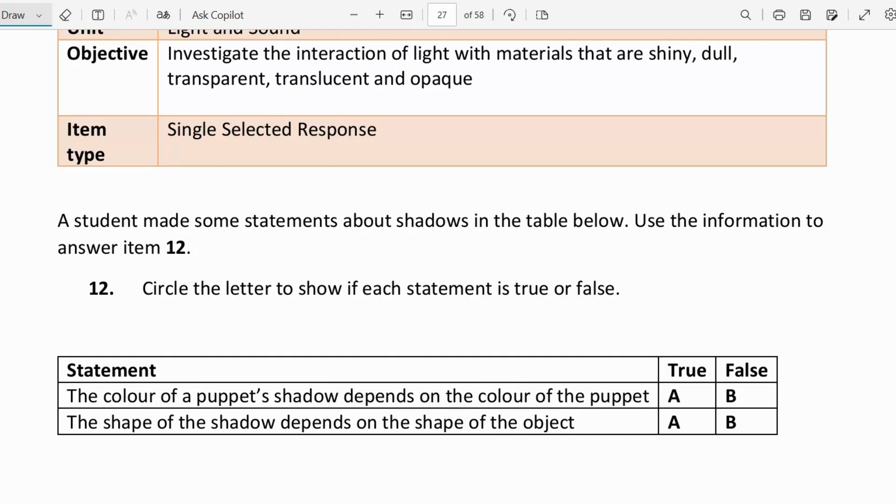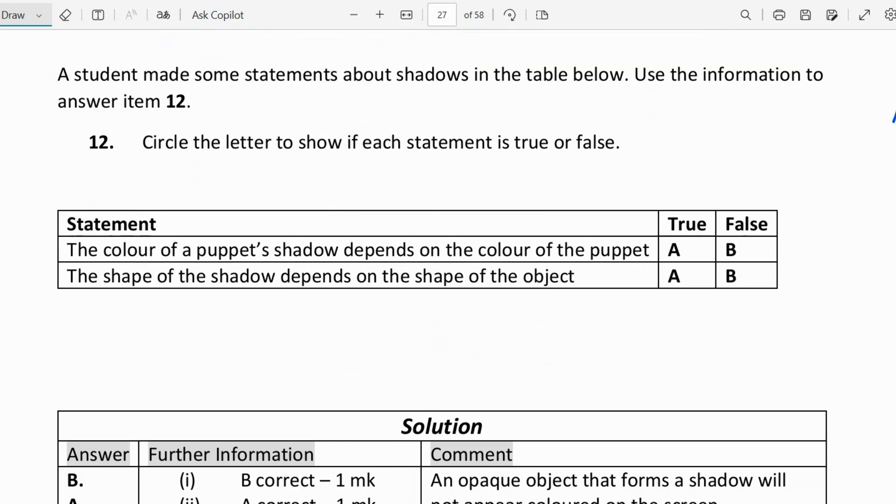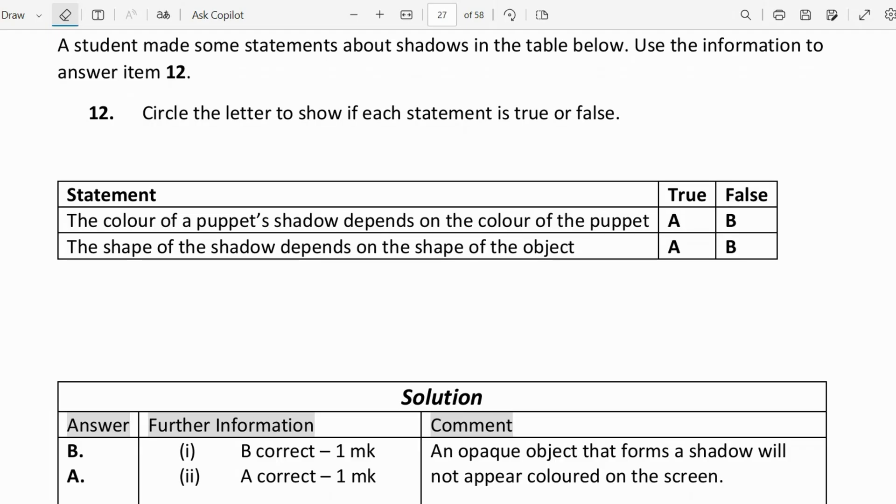If we know anything about shadows, when we look at the shadow, is the shadow usually the color of the thing that the light ray hits? That's not usually the case, right? So this is not a true statement, it's actually false. For the opaque object that forms a shadow, it will not appear colored on the screen.